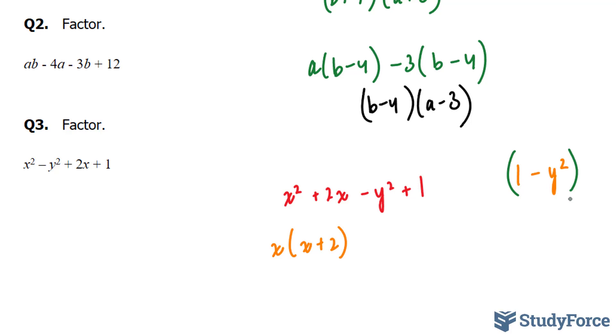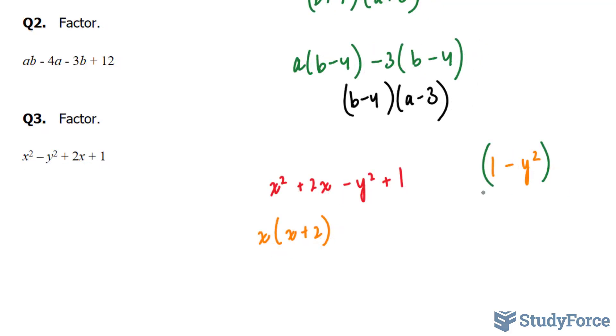What's special about these two terms is that this is a binomial representing a difference of squares. And I have a video dedicated on this. So this 1 is a perfect square, and so is this term. y to the power of 2 is a perfect square. Let me demonstrate. The square root of 1 is 1. And the square root of y squared is y.